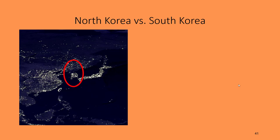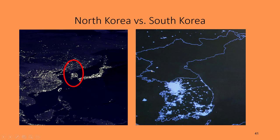We can see this dramatically with North Korea versus South Korea. At night, North Korea has essentially one light in the capital city, while South Korea is much more lit up. South Korea is far more economically free than North Korea. The per capita income in North Korea is about $1,300 per person per year, while in South Korea it's about $38,260 per person — showing that more economic freedom correlates strongly with higher living standards.